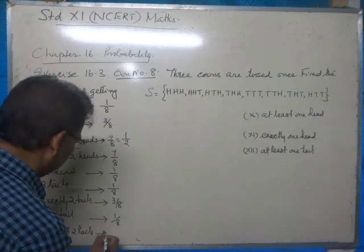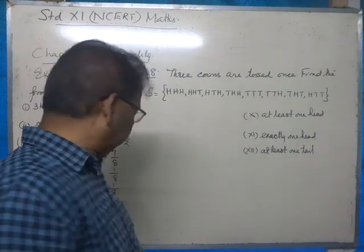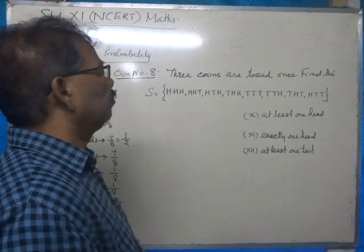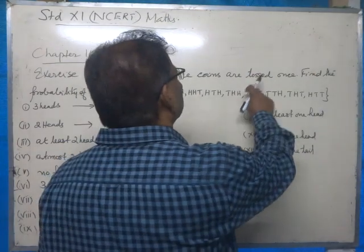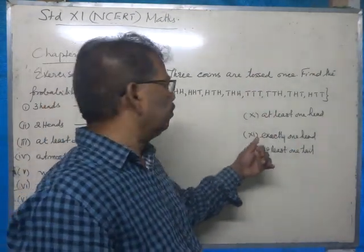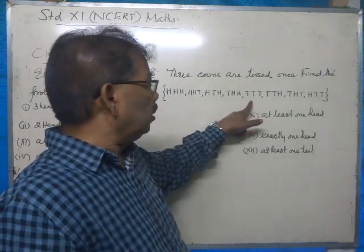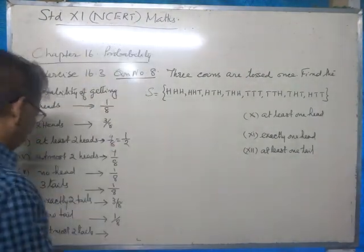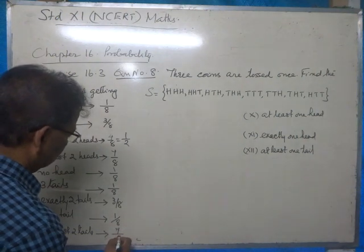Part nine asks for the probability of at most two tails, meaning at most there can be two tails. We need to exclude the element T, T, T, because in that occurrence there are three tails. Therefore the answer will be seven by eight.